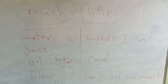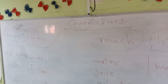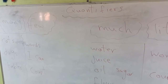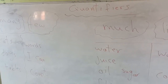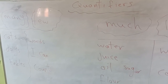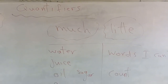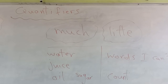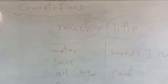Finally, I have two kinds of words: countable and uncountable. I use many — great in number — and few — small in number — with countable words I can count, like one cat, two cats, three cats. And for uncountable words I can't count, like water, juice, money, I use much — great in quantity — and little — small in quantity.